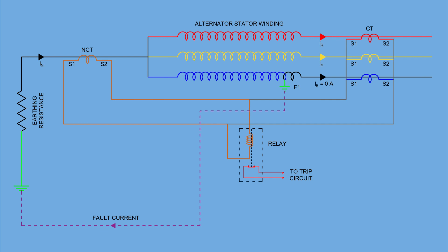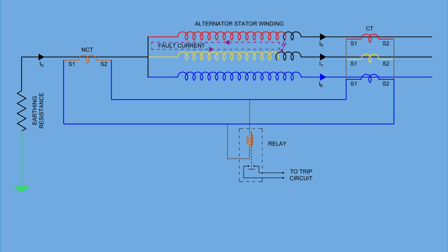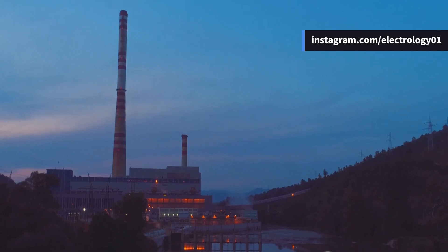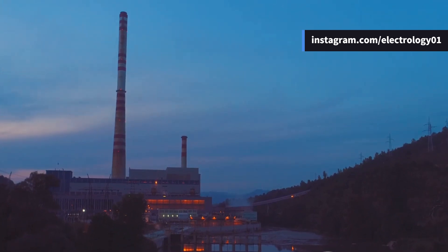But keep in mind, this scheme only responds to earth faults. Why? Suppose there is a phase-to-phase fault between R and Y phases. The fault current will circulate through that loop. The CTs will not sense any imbalance in current, so no differential current will appear and the relay will not operate. That's why phase-to-phase faults are not detected by this scheme unless they eventually lead to earth faults. So that wraps up how balanced earth fault protection works in alternators, where Mertz-Price schemes just aren't practical.